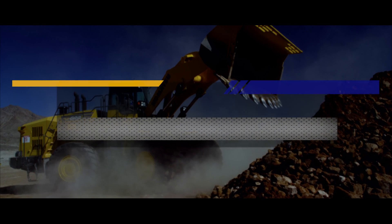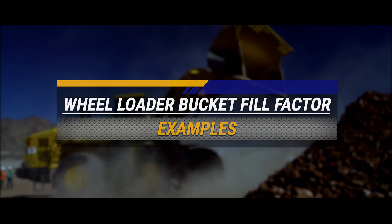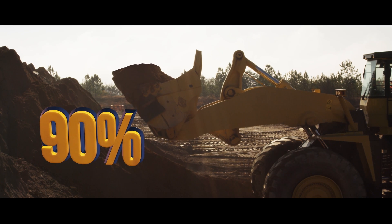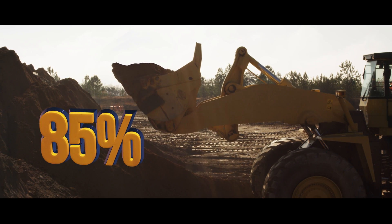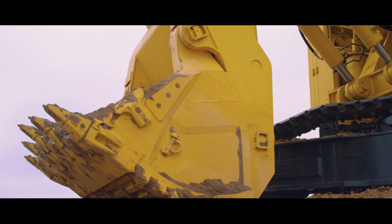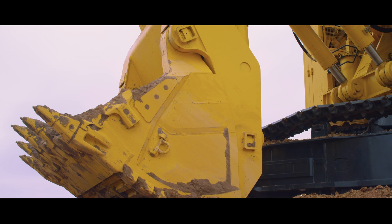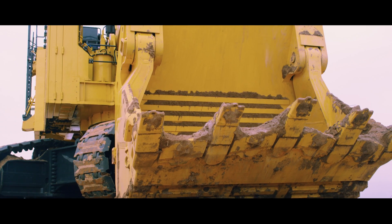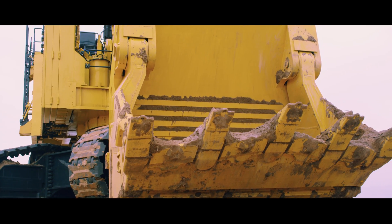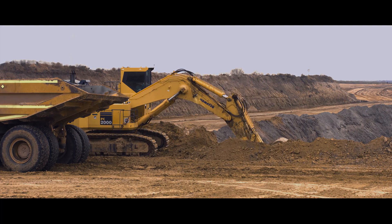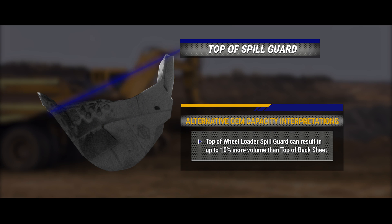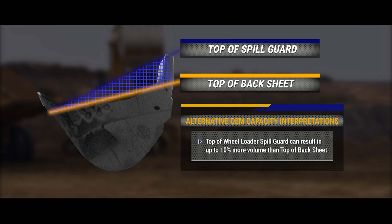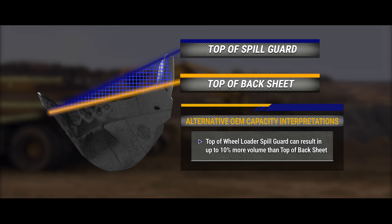Likewise, here are examples of wheel loader bucket fill factors: 100%, 90%, and 85%. When selecting and comparing buckets, it is important to note that OEMs sometimes use different interpretations of SAE guidelines for bucket rating purposes, such as defining the struck capacity rating to the top of the spill guard, as opposed to the top of the back sheet. This can result in a 10% increase in volume for buckets of the same class.